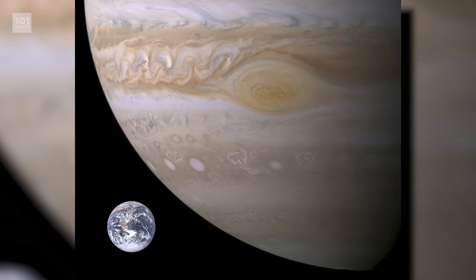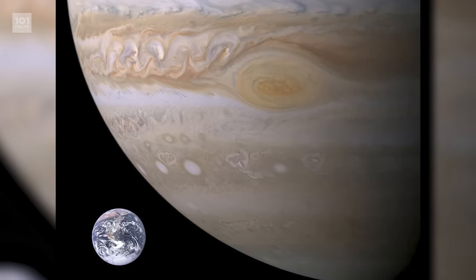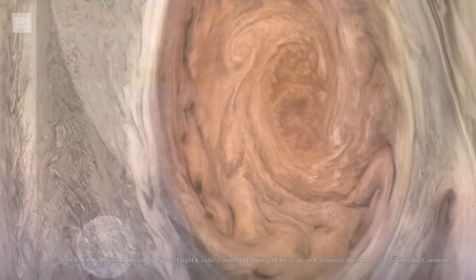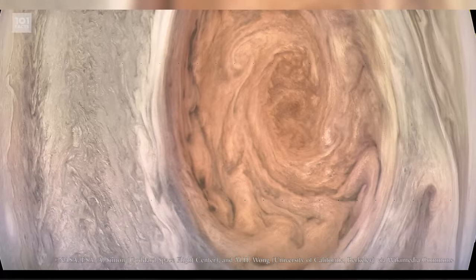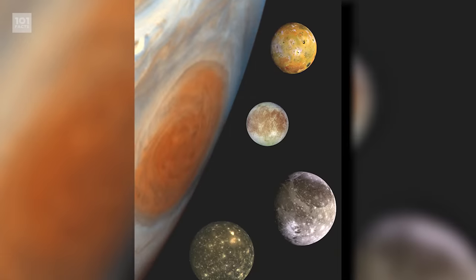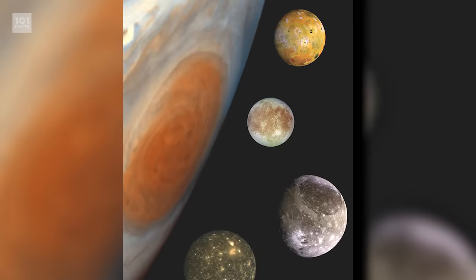The spot spins anticlockwise and takes six entire days to rotate completely. That's right, by the time the storm has spun once, we've spun six times. And also, no one's pretty sure why the spot is red. It just is. Moving on.